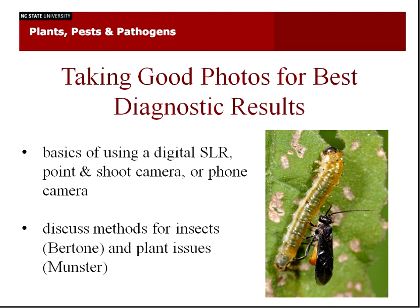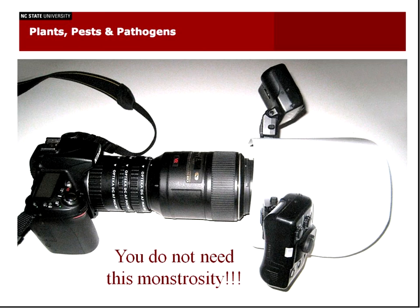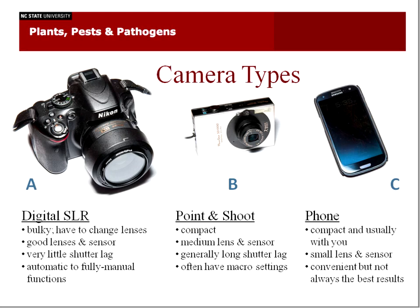You do not need this massive rig that I use to take my photos to get good photos of insects and issues. A lot of people are getting these digital SLRs — these big cameras. The disadvantages are they're bulky and you have to change lenses, but the lenses and sensors are really good so you can get very clear pictures. They have very little shutter lag, so when you press the button, it takes the photo right away, and you have many automatic or fully manual functions.